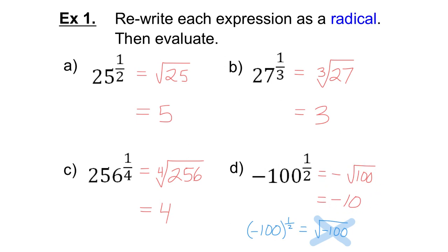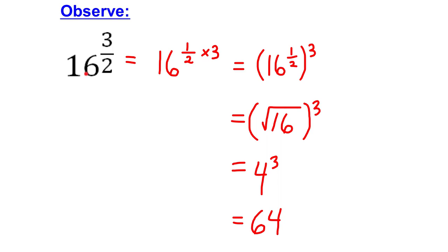This should be the way you do it. Now, I want to switch gears here. Here we have a power with a rational exponent, but this time the numerator is not 1. So, I want to show you how you can think of this. 3 over 2 is the same as 1 over 2 times 3. Working backwards, my power of a power rule is multiply the exponents. So, I can turn this into a power of a power: 16 to the exponent 1 over 2 to the exponent 3. Now, 16 to the 1 over 2 is the square root of 16.